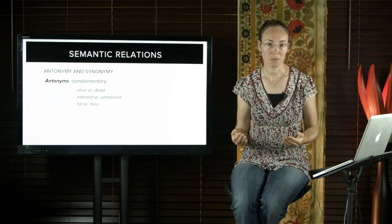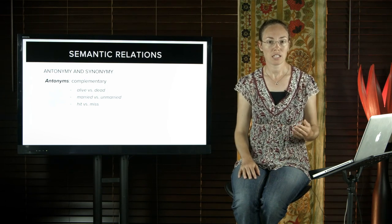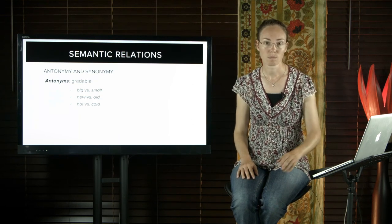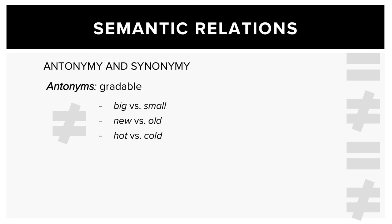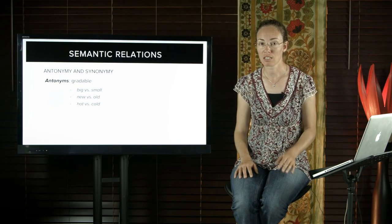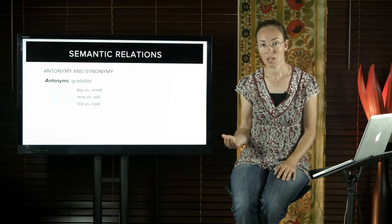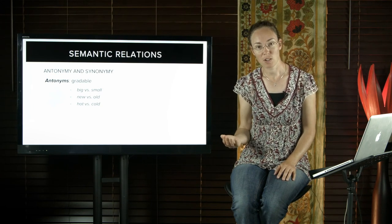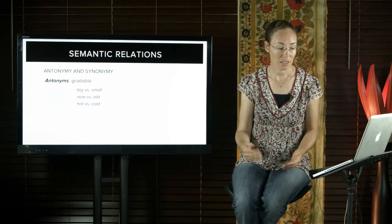But some antonyms are gradable antonyms. These are antonyms, but they have shades or degrees of meaning between them. So big versus small: a mouse might be big in relation to a flea, but small in relation to a cow. New versus old, or hot versus cold. A cup of coffee might be hot compared to ice, but cold compared to magma. A cup of coffee can be a bit hot or not very hot. One cup of coffee can be hot, another can be hotter, and yet another the hottest.